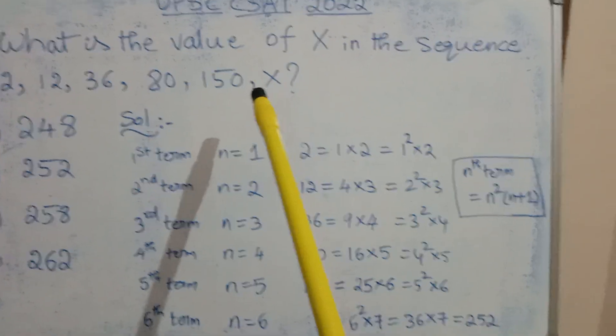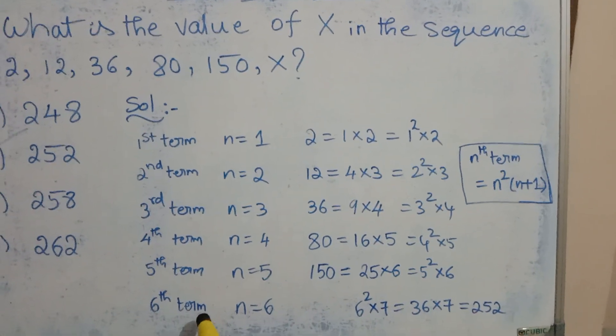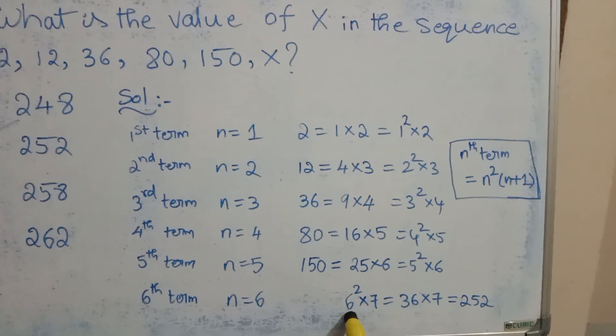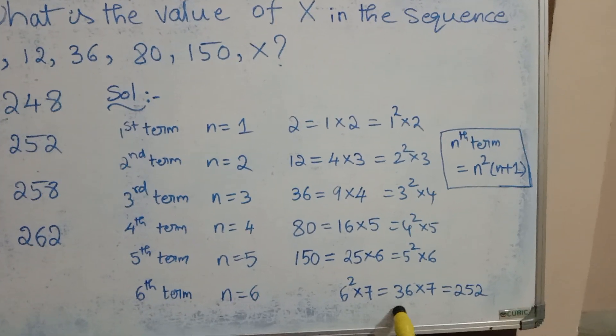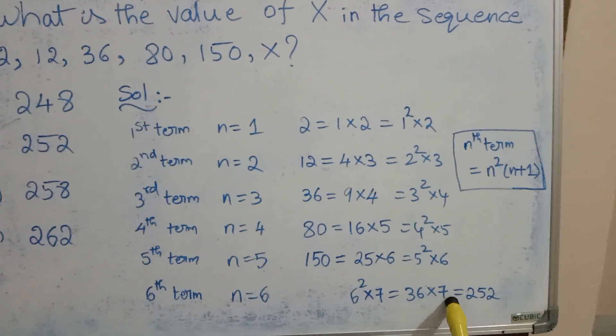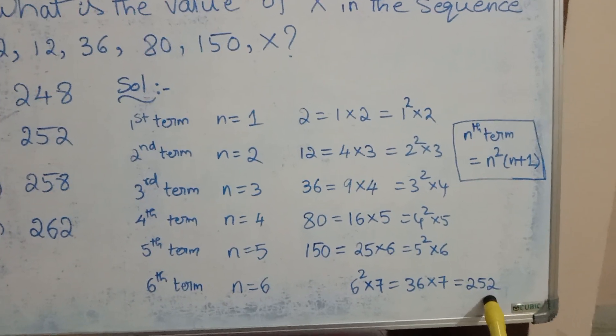x is the 6th term so it must be of the form 6 square x 7 which is 36 x 7 which is equal to 252.